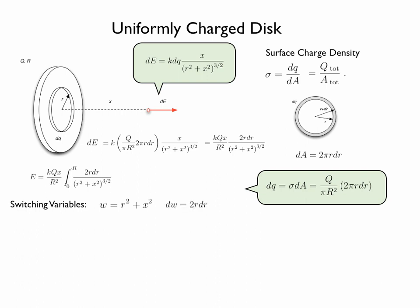We can easily see that in that case 2r dr is simply dw. For the new limits: when little r equals 0, the new variable w must equal x squared.